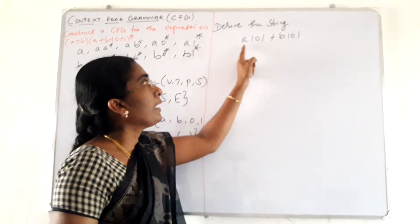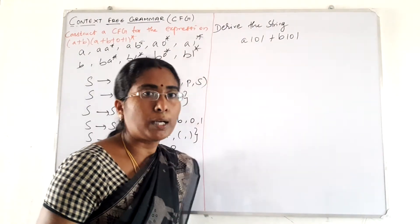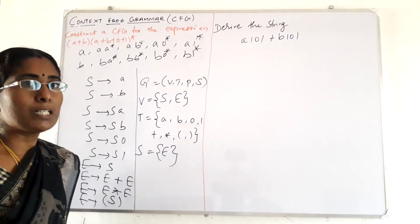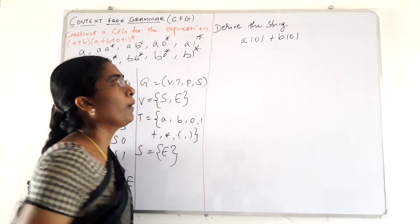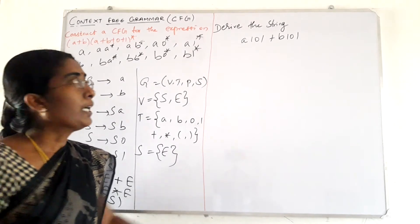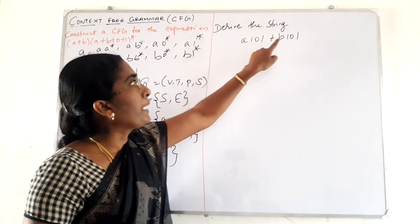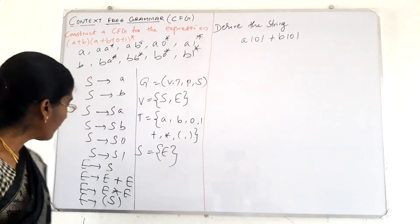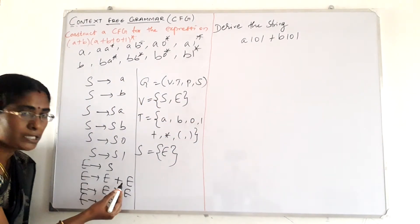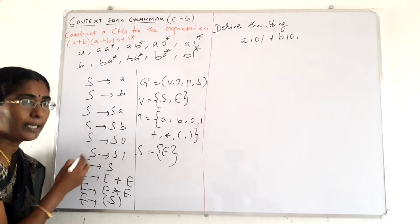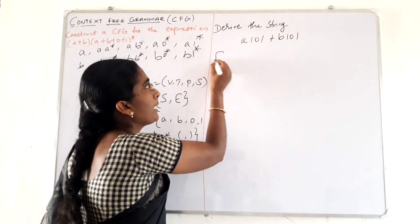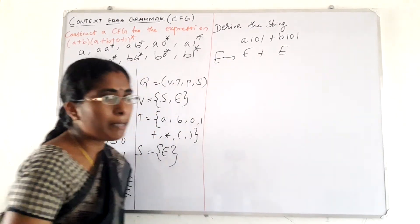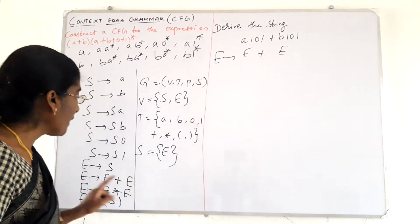Next, derive the string A101 plus B101 using the CFG. The given string is A101 plus B101. This is of the form E implies E plus E, so we write the production E implies E plus E.